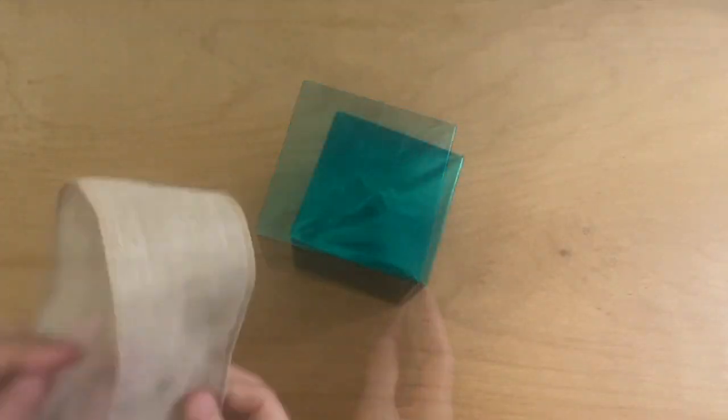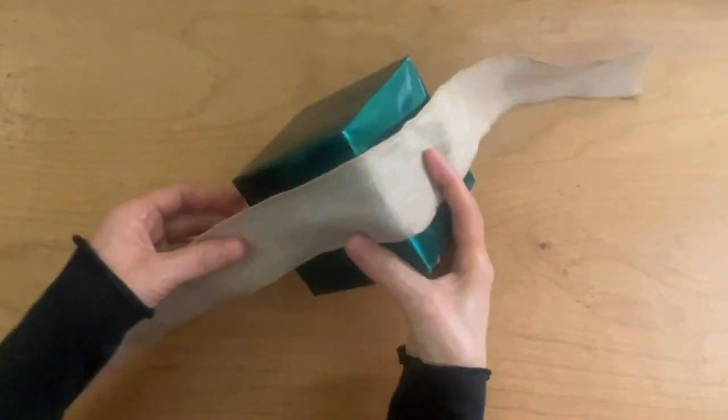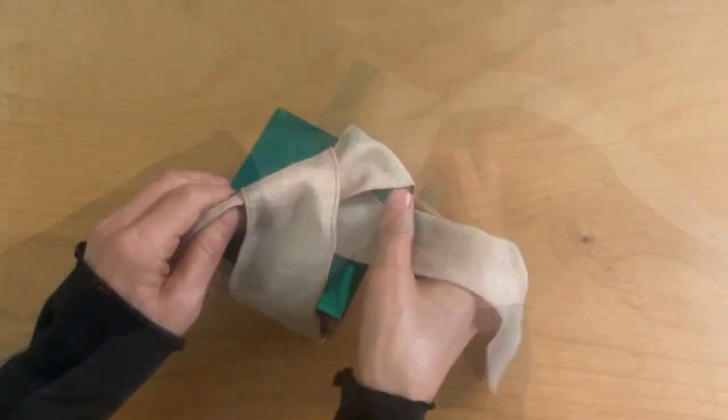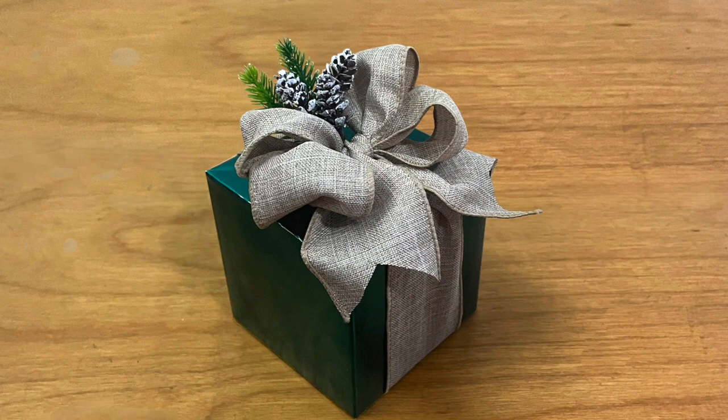Wrap a ribbon around the box in the same way. Follow the previous steps to create a ball with four loops and you have this gorgeous gift wrapping.